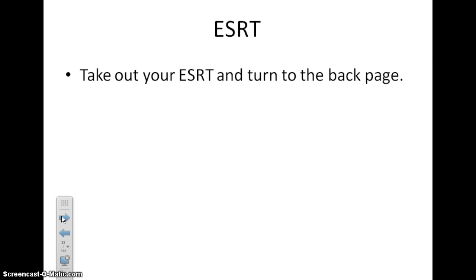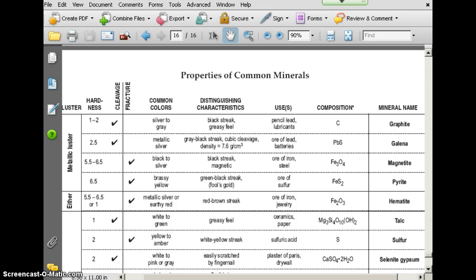Finally, let's take a short look at the Earth Science reference table. Turn your reference table to the back page of your ESRT and take a look at the properties of common minerals chart. On the left side you've got luster. You're going to notice right away: if it's metallic, it's only going to be one of four or five minerals, because this one can be either. So immediately, if it's metallic, that helps you. I would always do metallic or non-metallic first — luster first.